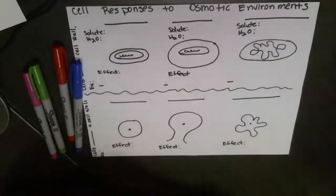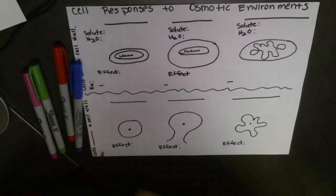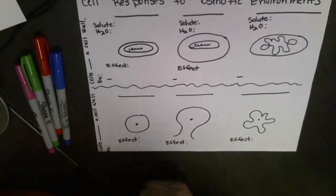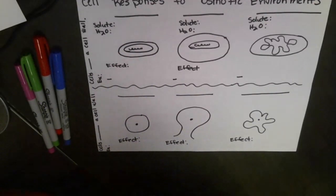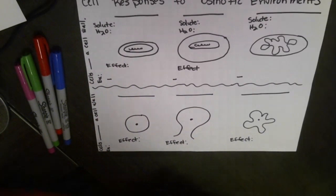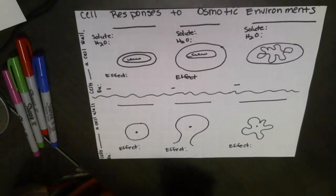Here we're going to go over some of the responses of cells to different osmotic environments. Remember, osmosis is the diffusion of water across a semi-permeable membrane. So we're going to be looking at solutes in solution — usually we talk about them as salts, although they can be sugars and other things as well. We're going to be looking at what happens when we have differing concentrations of solutes in cells, and we're going to be looking at two types of cells.